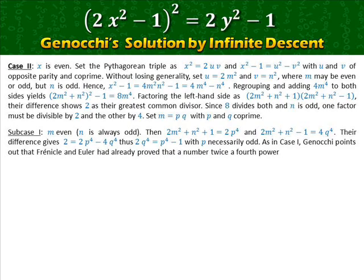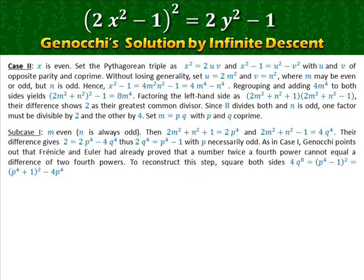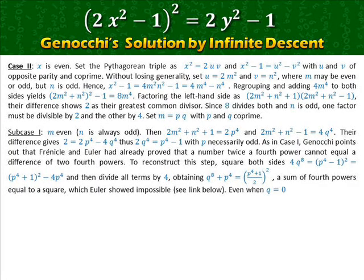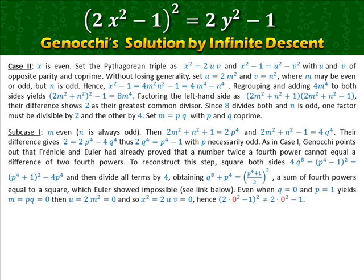To reconstruct this step, square both sides and then divide all terms by four, obtaining a sum of fourth powers equal to a square — which Euler showed to be impossible. Even when q = 0 and p = 1, this yields m = 0, then u = 0, and so x = 0, giving the trivial solution.